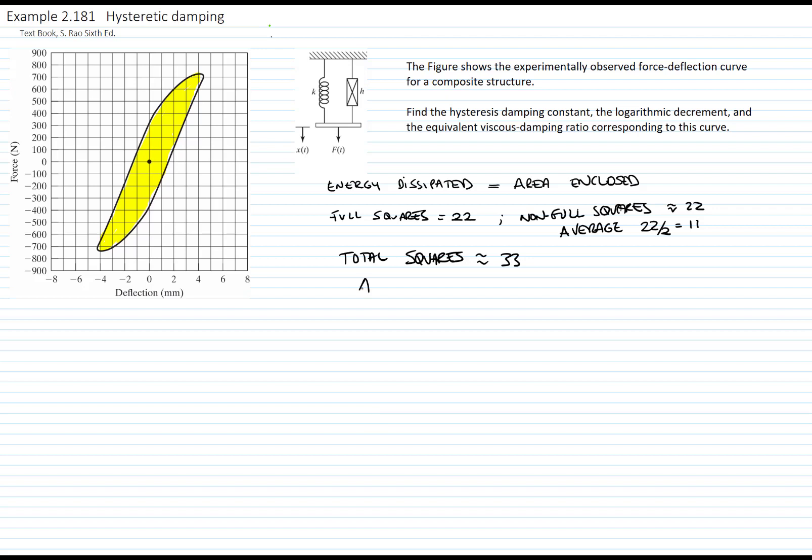Each square is 100 newtons times 1 millimeter. My total dissipated energy is equal to 3.3 newton-meters.